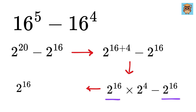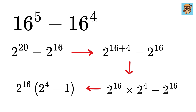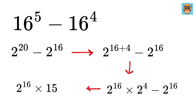Now take 2 raised to 16 as common, and this will be 2 to the 4th power minus 1. 2 to the 4th is 16, and 16 minus 1 is 15.